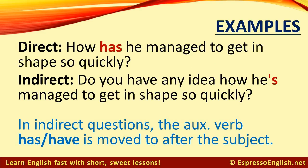Here's one in the present perfect. Direct: 'How has he managed to get in shape so quickly?' Indirect: 'Do you have any idea how he's managed to get in shape so quickly?' In indirect questions in the present perfect, the auxiliary verb 'has' or 'have' is moved to after the subject.